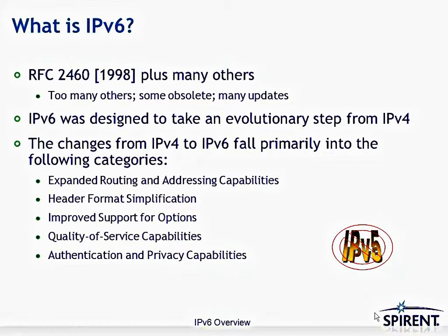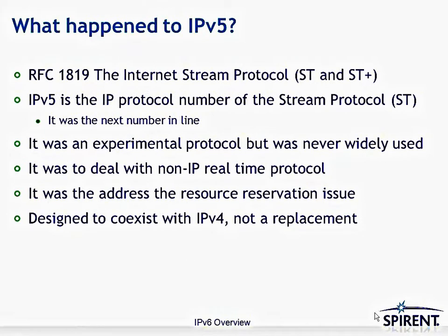The biggest reason for conceiving IPv6 was expanding routing and addressing, while also simplifying things and adding capabilities such as quality of service, authentication, and privacy. You might ask: what happened to IPv5? There is an RFC that defined IPv5 — RFC 1819, the Internet Streaming Protocol. It actually isn't an IP protocol, but they were considering using it in conjunction with IP, so they took the number 5, the next protocol after IPv4. But it was never really used.